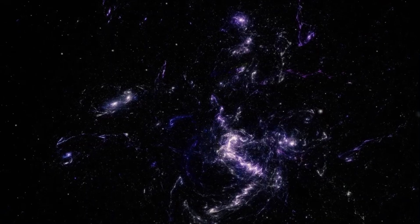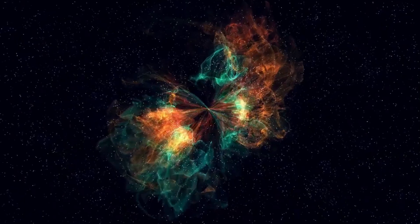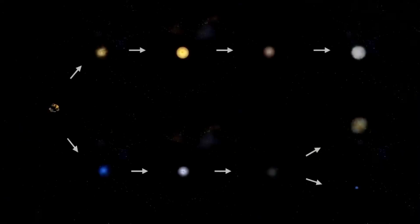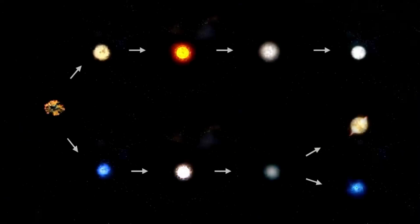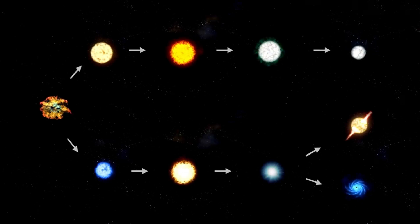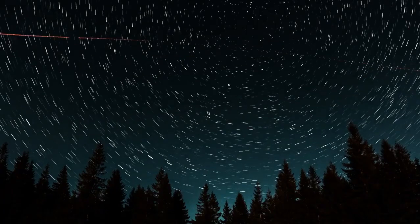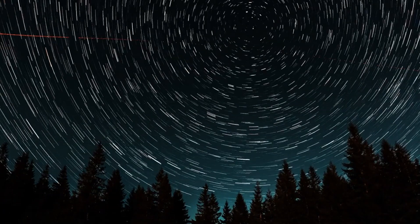If Betelgeuse were to go supernova, it would be a once-in-a-lifetime event for humanity. The explosion would be visible to the naked eye, even in daylight, and would remain bright in the night sky for weeks or even months. The light from the supernova would travel 650 years to reach Earth, meaning that the explosion would have actually occurred in the 14th century.